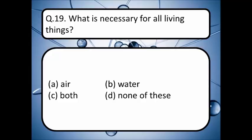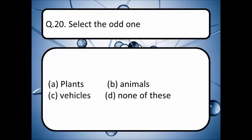What is necessary for all living things? Options are air, water, both, or none of these. The correct answer is option C — both. Select the odd one out — read your options A, B, C, or D, write your correct answer in the comment box. The correct answer is option C.